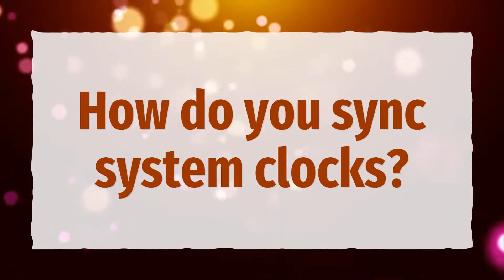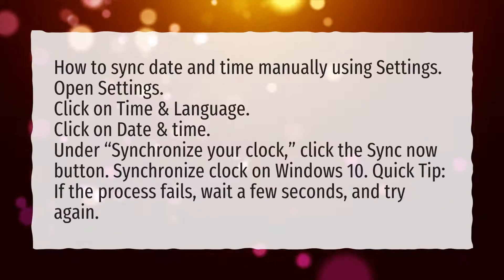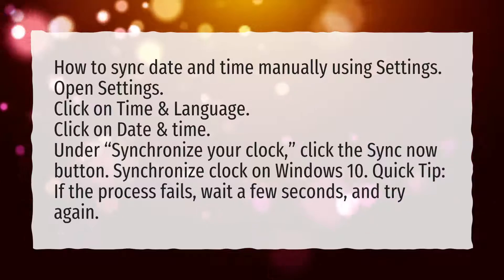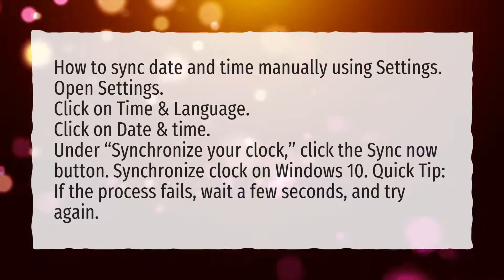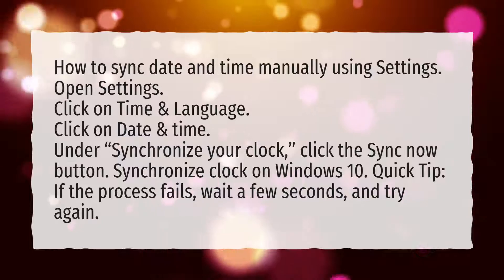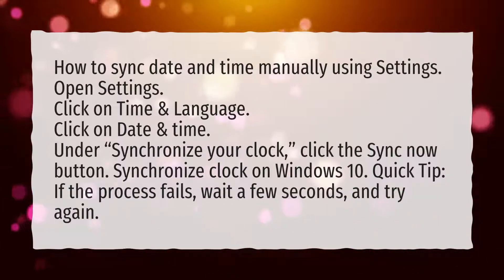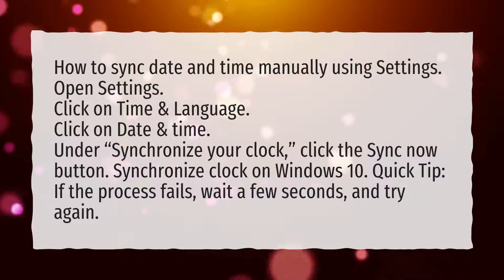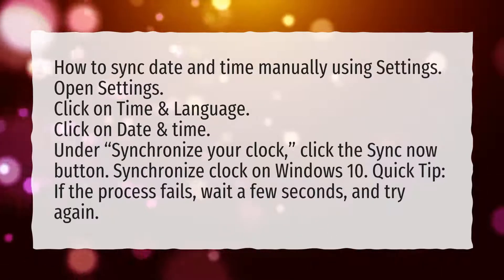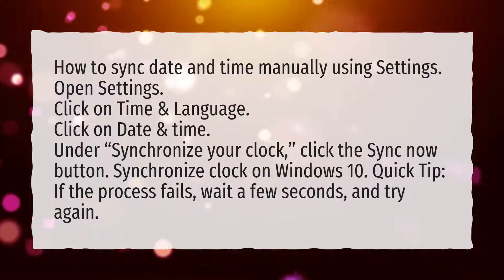How do you sync system clocks? How to sync date and time manually using Settings: Open Settings, click on Time and Language, click on Date and Time. Under Synchronize Your Clock, click the Sync Now button to synchronize the clock on Windows 10. Quick tip: if the process fails, wait a few seconds and try again.